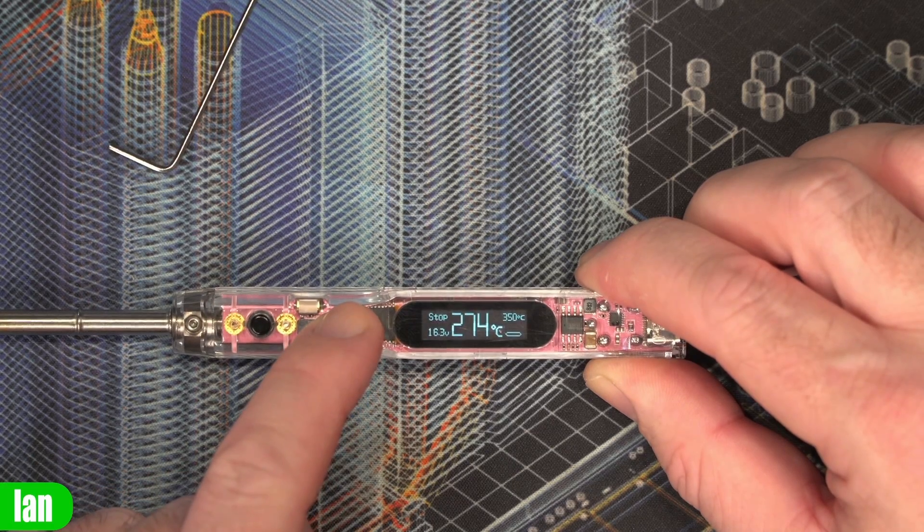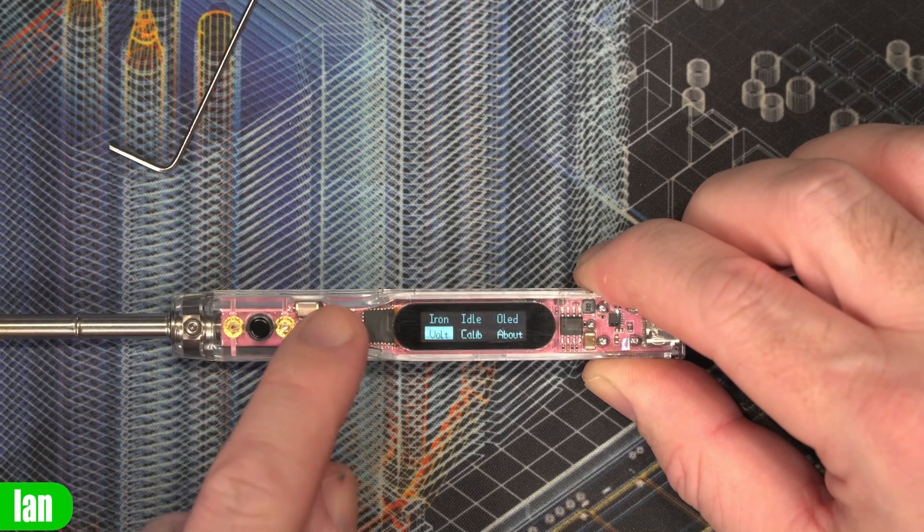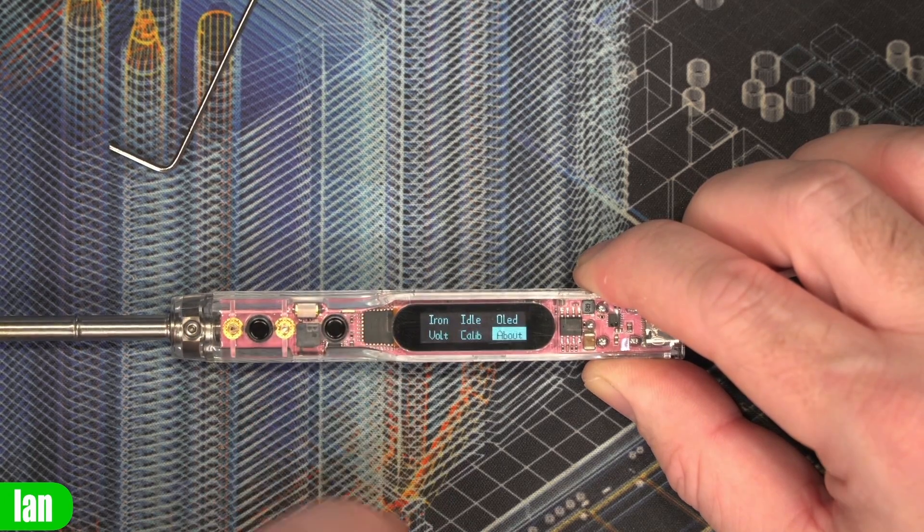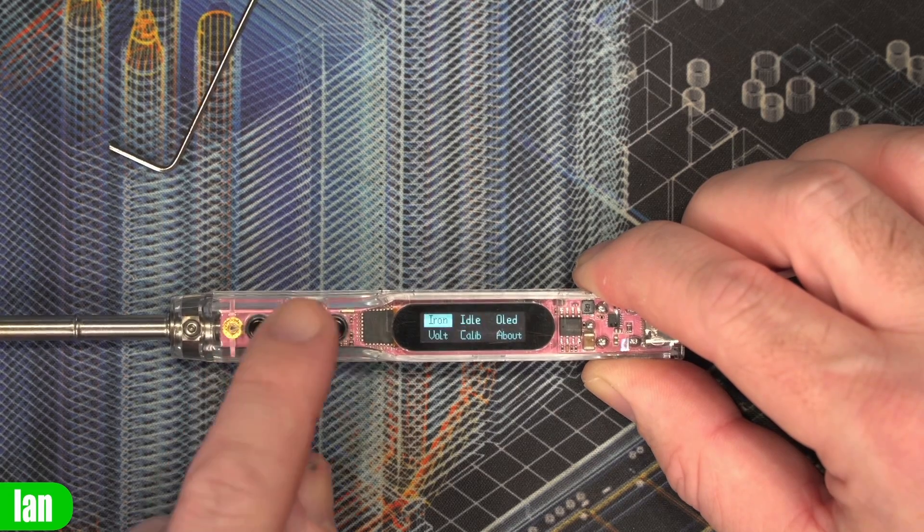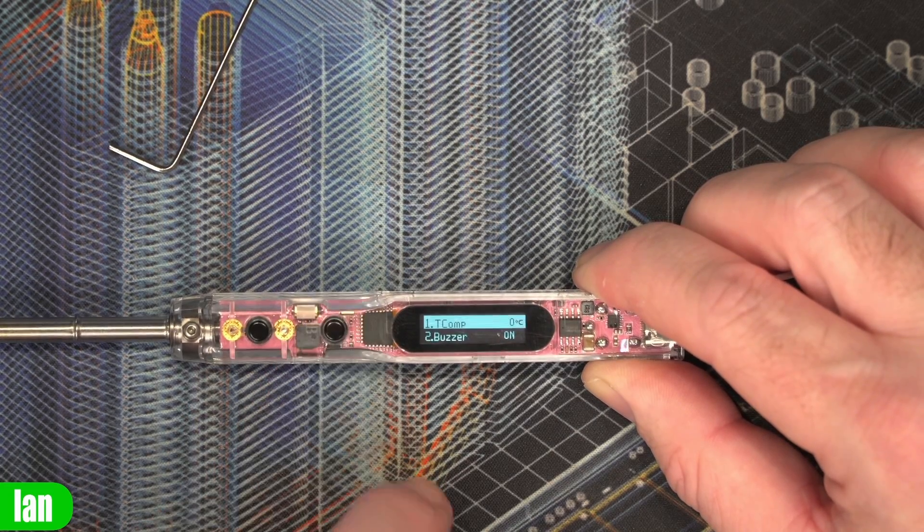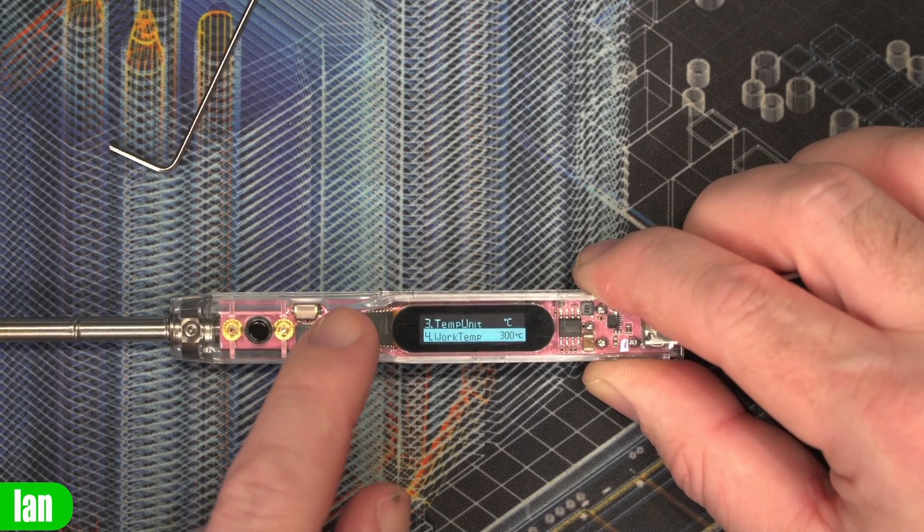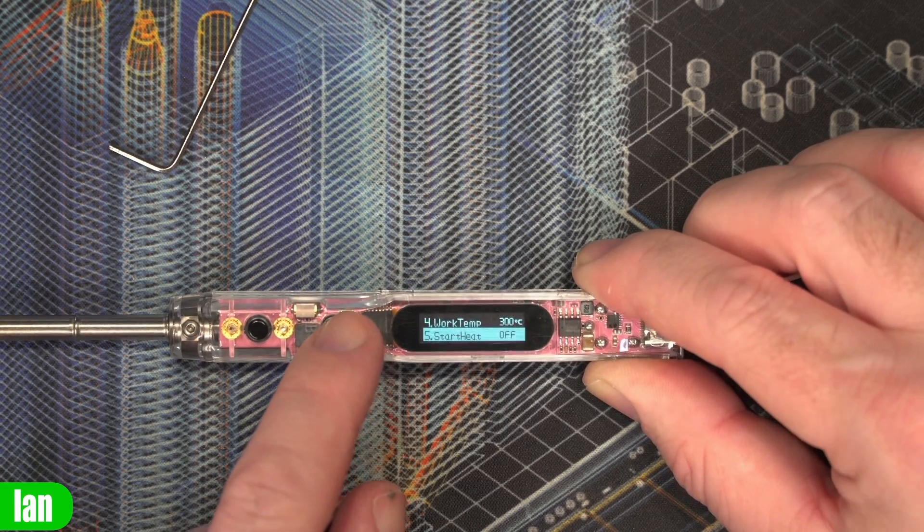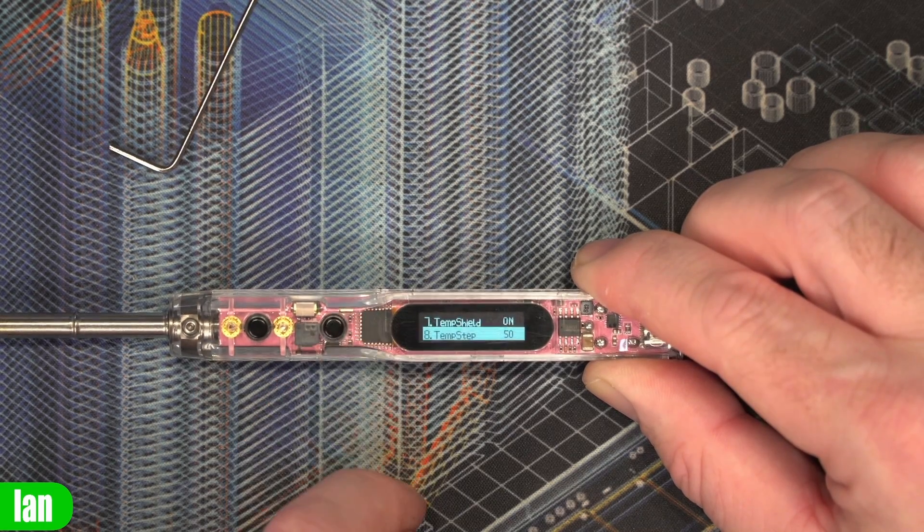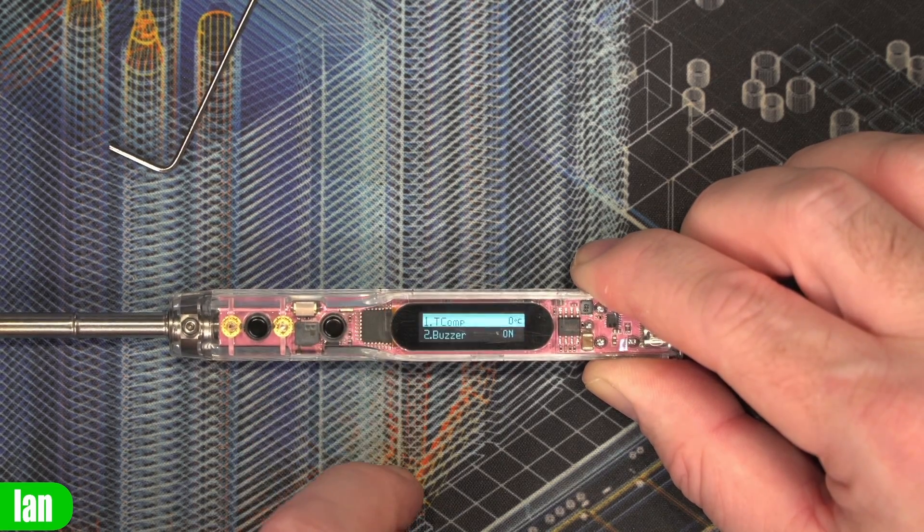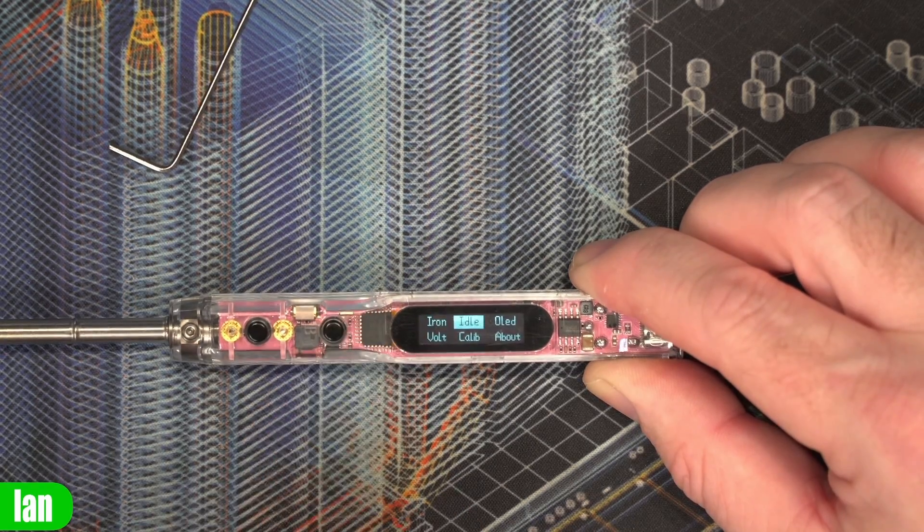Walking you through some of the menu options, if I press and hold this button here it enters the menu. You can see we have settings for iron, idle, OLED, volt, calibration and about. The iron settings allow us to change the settings for temperature and things like that. You've got t-comp, buzzer, temp units, work temperature, start heat on and off, factory set, temperature shield, temperature steps. That's the steps it moves through and if you just wait it'll back out of that menu into the next one.